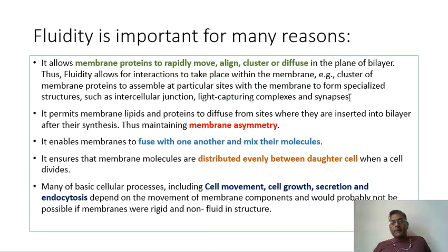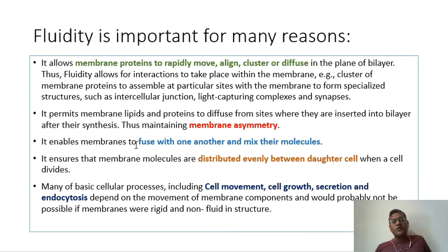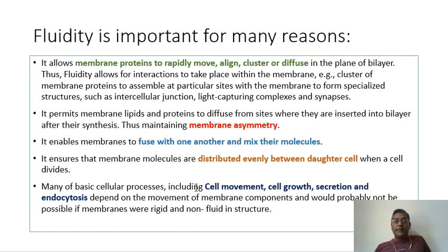Fluidity permits membrane lipids and proteins to diffuse from sites where they are inserted into the bilayer after synthesis, maintaining membrane asymmetry. It enables membranes to fuse with one another and mix their molecules — as demonstrated by the cell fusion experiment. It ensures membrane molecules are distributed evenly between daughter cells when a cell divides. Many basic cellular processes including cell movement, cell growth, secretion, and endocytosis depend on the movement of membrane components and would not be possible if membranes were rigid and non-fluid.